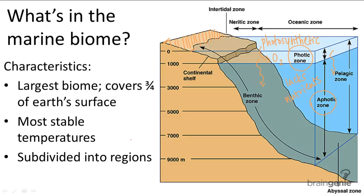Right under the intertidal zone is the neuritic zone, which starts at the low tide mark and goes down to the continental shelf — this is the ocean water we see at the beach. It is inhabited by seaweed, crustaceans, sea urchins, and different types of fish. There are overlaps in the species inhabiting the intertidal and neuritic zones because they're so close together. Both the intertidal and neuritic zones form the littoral zone.